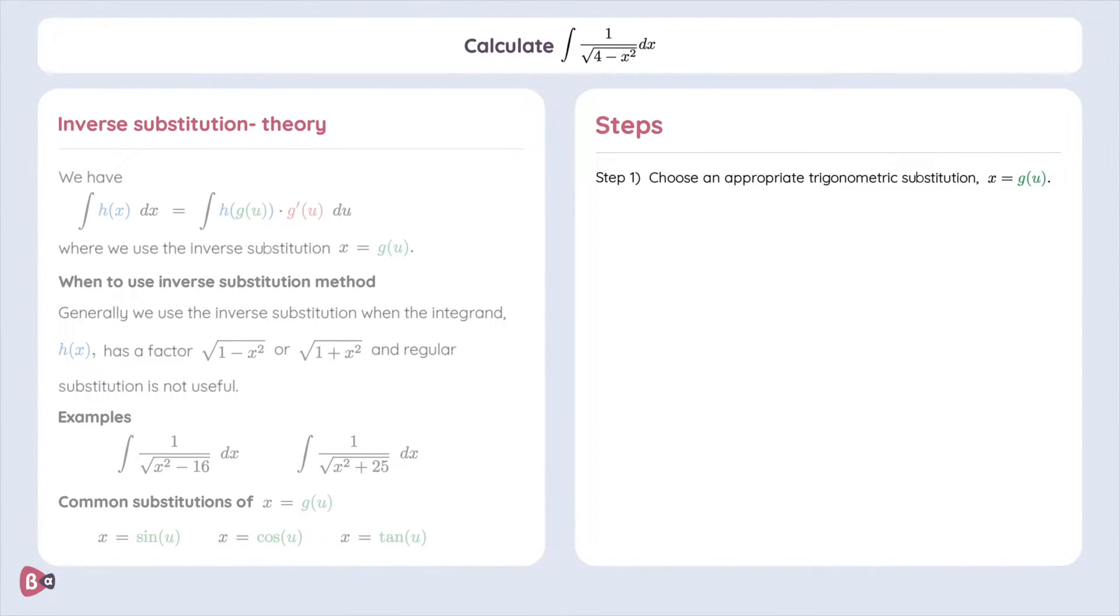Hence, an appropriate trigonometric substitution in this case is g of u is equal to 2 times sine of u.